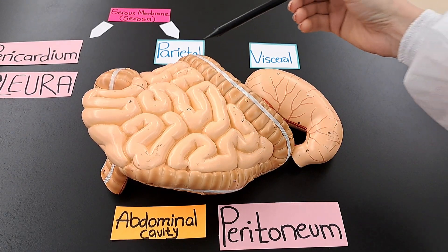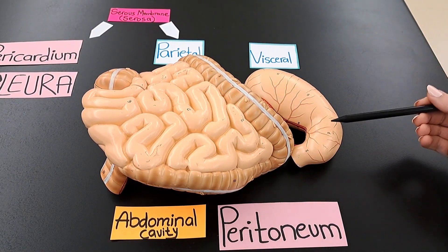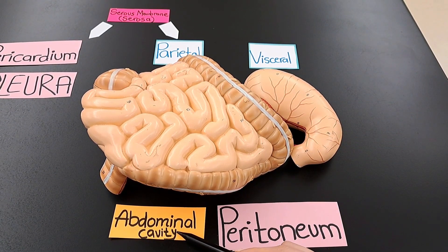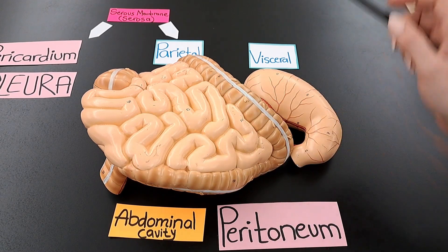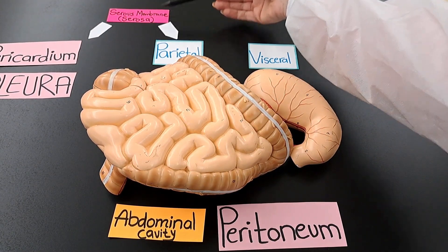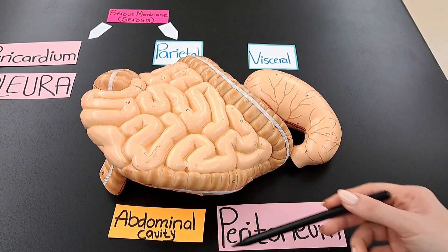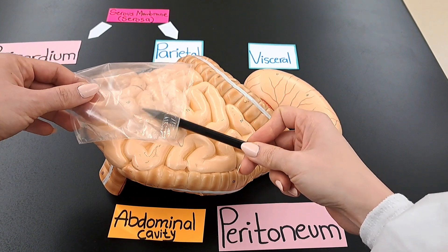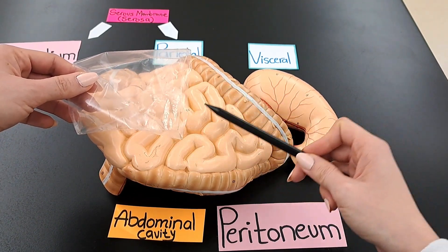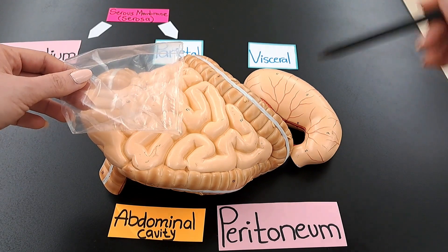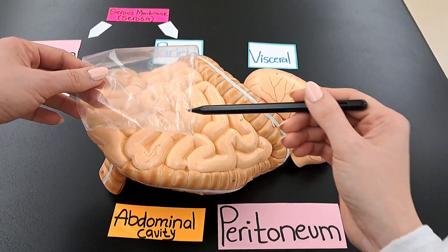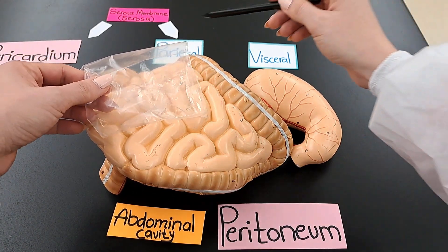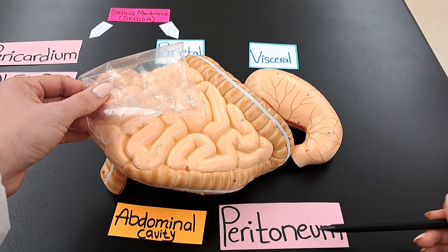This is the small and large intestine and the stomach, which are located in the abdominal cavity. They are covered with a serous membrane, which is called the peritoneum. The layer of the peritoneum that covers the intestines and the stomach is the visceral peritoneum. The layer that lines the abdominal cavity is the parietal peritoneum.